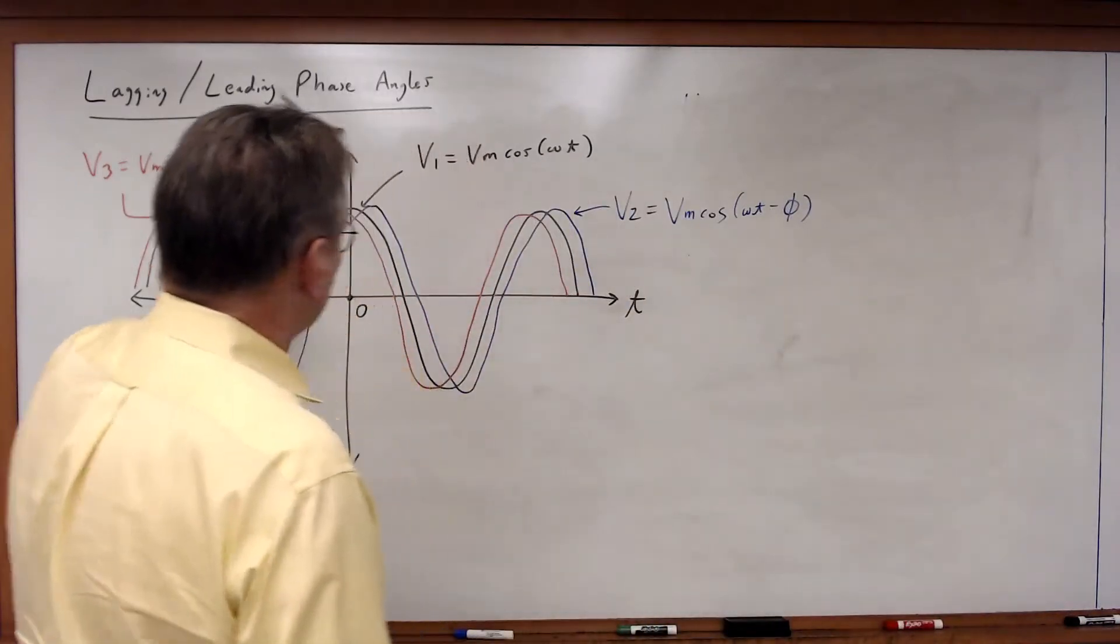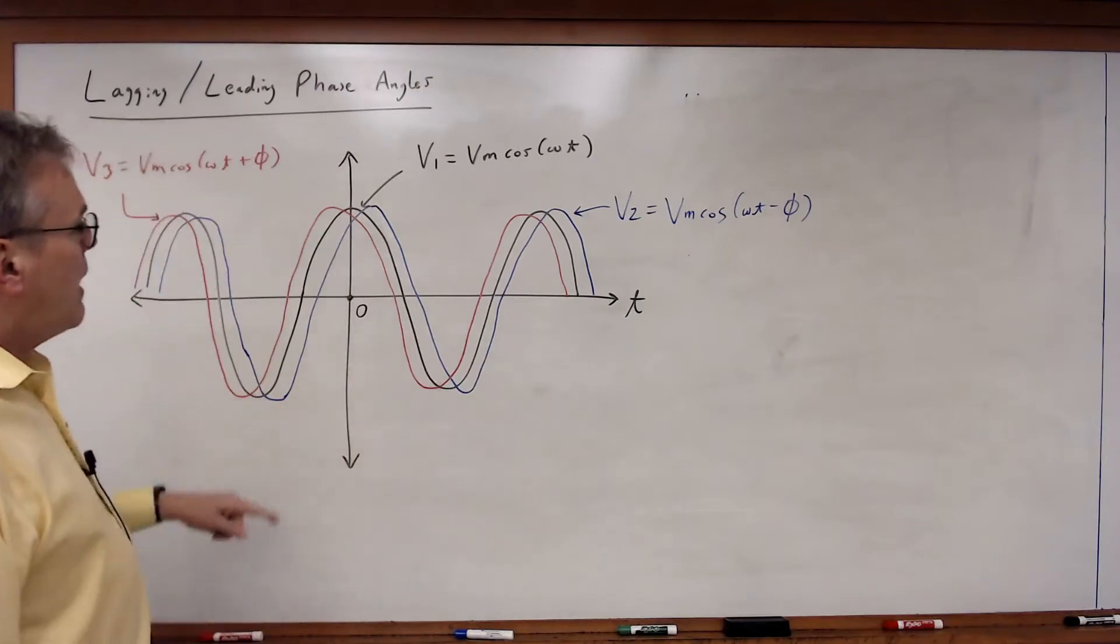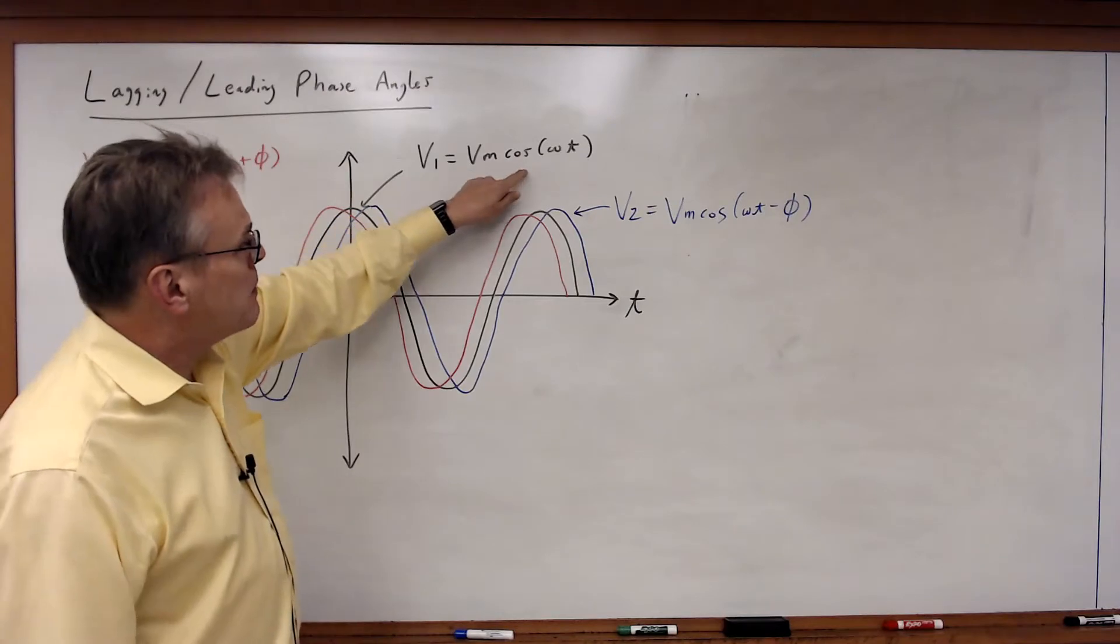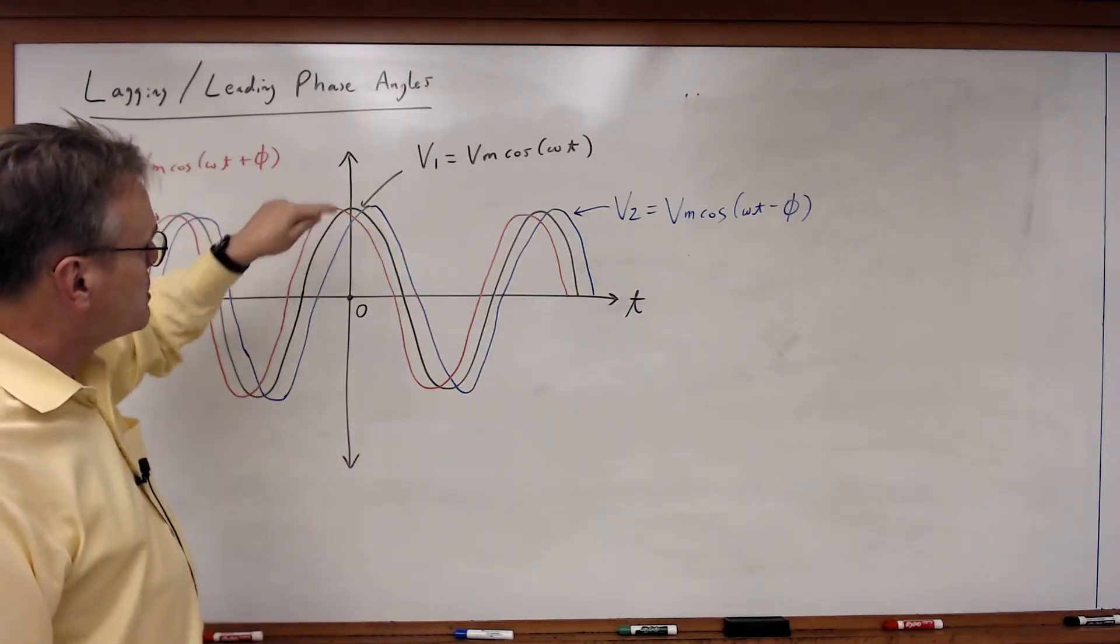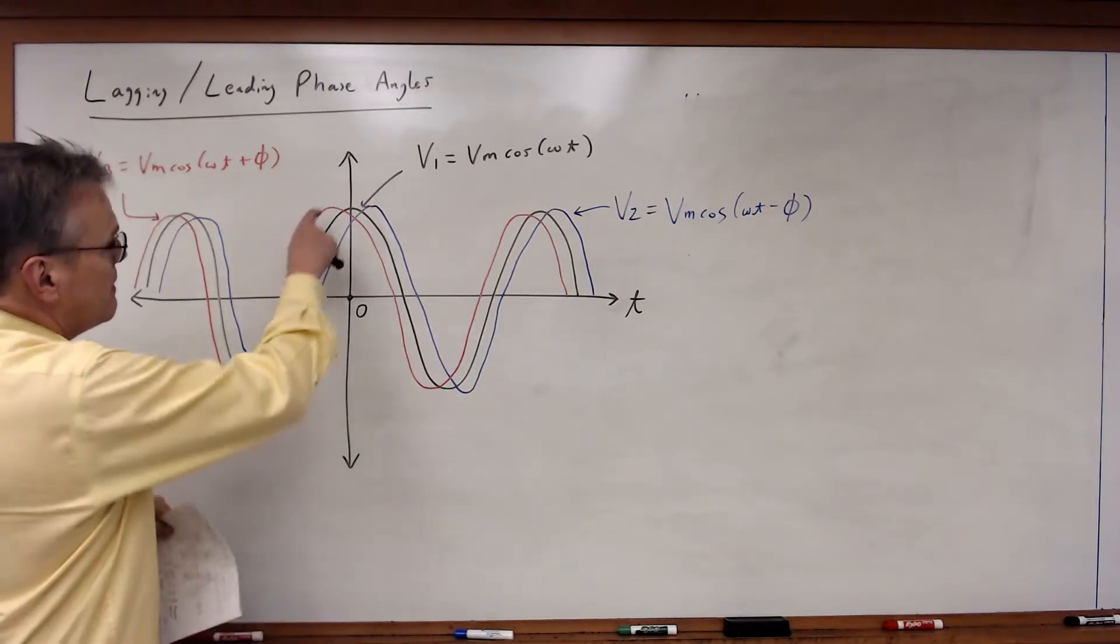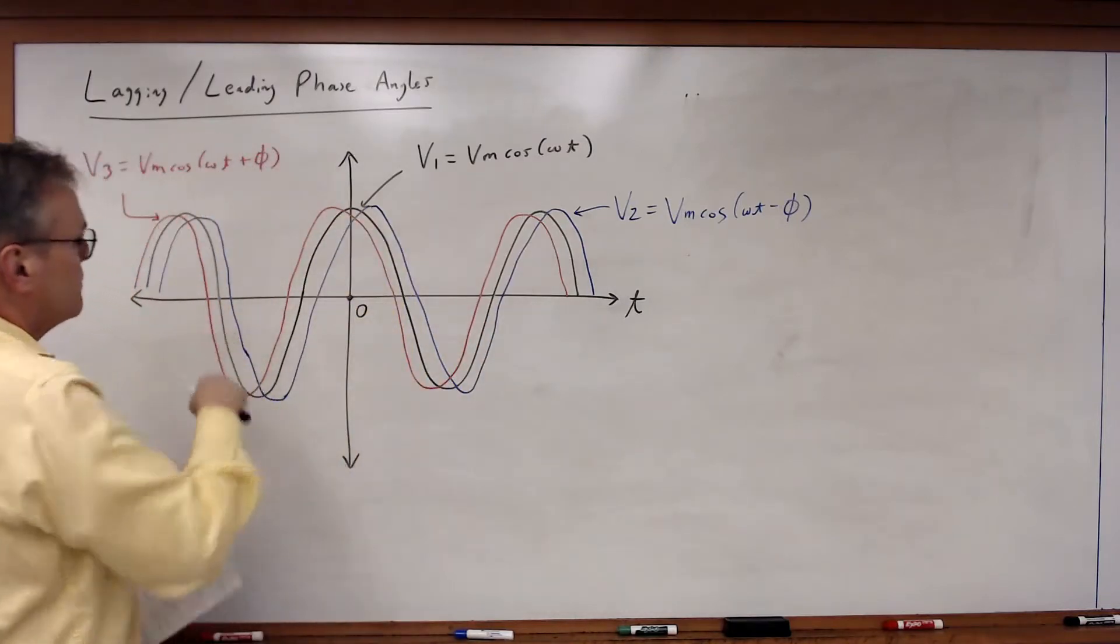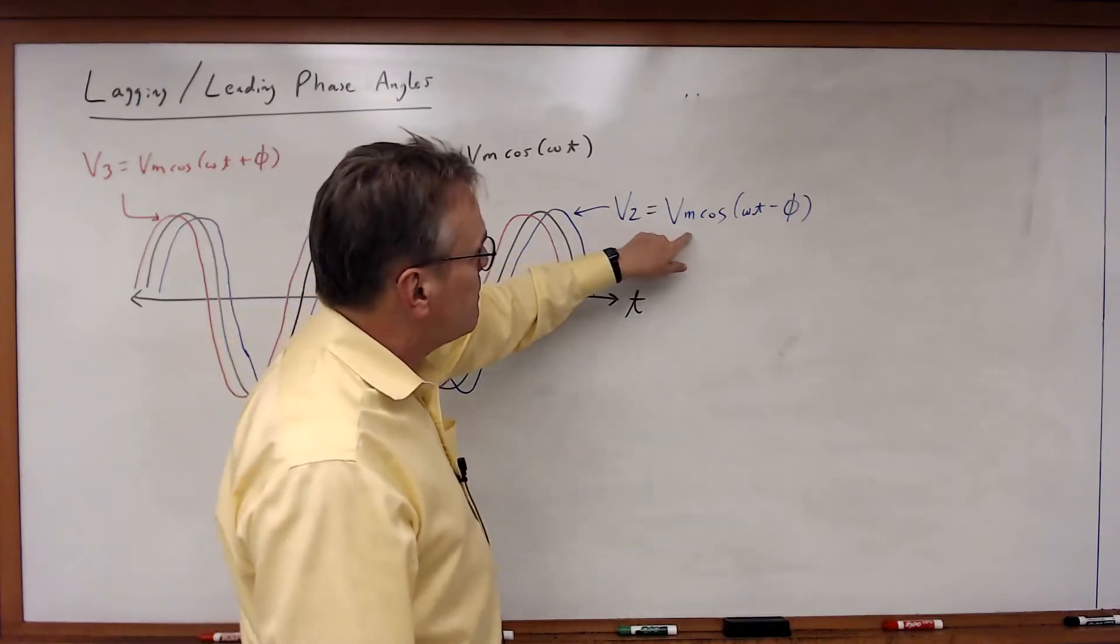What I've done here is I've plotted out three voltages on a time axis, and the center one in black is v1 equals Vm cosine omega t. So at time t equals 0 it reaches its maximum value of Vm and then oscillates through as we go through each cycle.